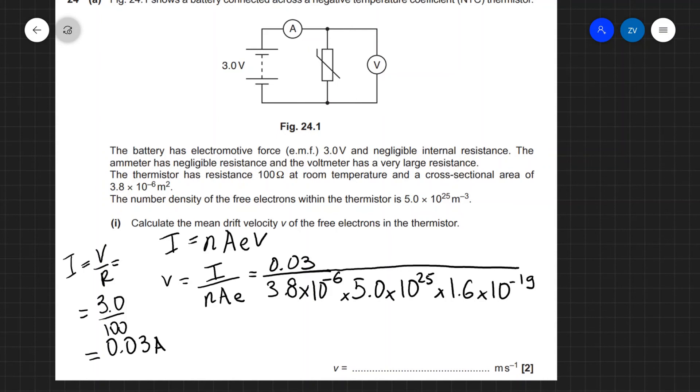Now all we need to do then is input this into our scientific calculator and if we do this correctly we're going to get that the drift velocity is equal to 9.9 times 10 to the power of minus 4 meters per second.